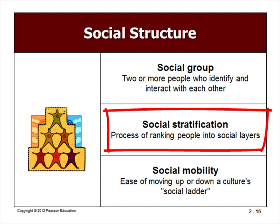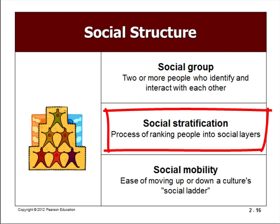The top layer includes royalty, government officials, and business leaders. The middle layer includes scientists, medical doctors, and others with a university education. The bottom layer includes manual and clerical workers with vocational training or secondary school educations.